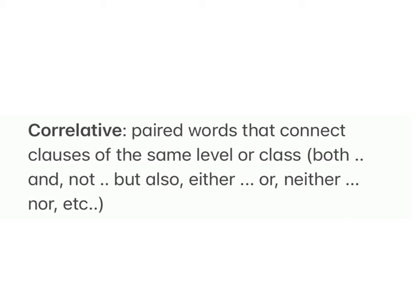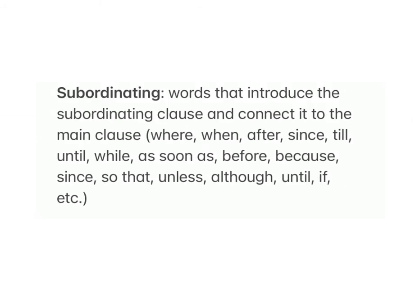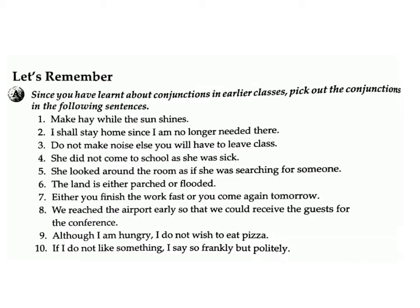Correlative conjunctions are paired words that connect clauses of the same level or class: both...and, not only...but also, either...or, neither...nor, etc. Subordinating conjunctions are words that introduce the subordinating clause and connect it to the main clause: where, when, after, since, till, until, while, as soon as, before, because, since, so that, unless, although, until, if, etc.